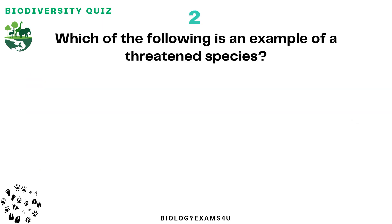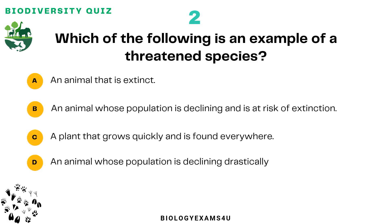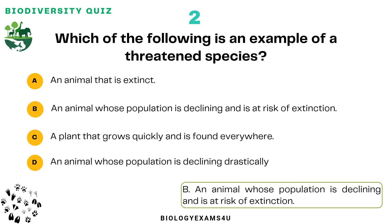Question number two: Which of the following is an example of a threatened species? Option A: An animal that is extinct. Option B: An animal whose population is declining and is at the risk of extinction. Option C: A plant that grows quickly and is found everywhere. Option D: An animal whose population is declining drastically. The correct answer is: a threatened species is an animal whose population is declining and is at the risk of extinction.